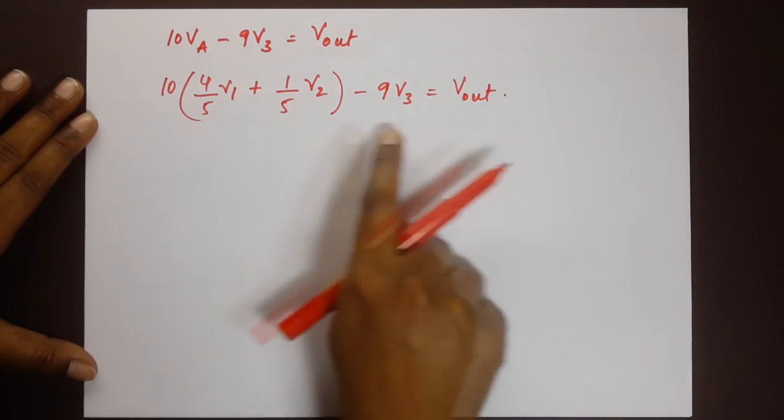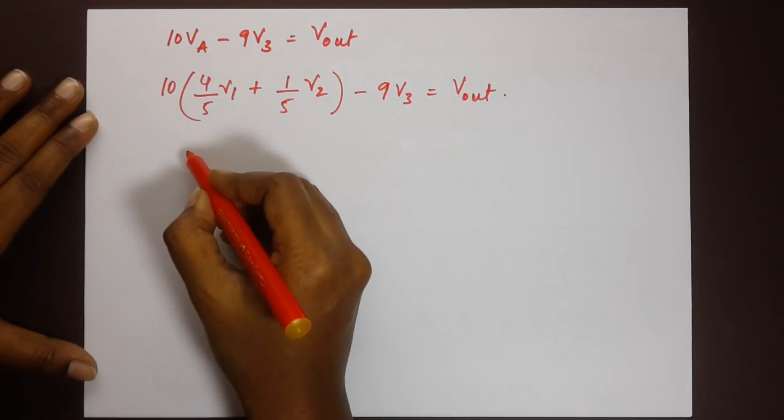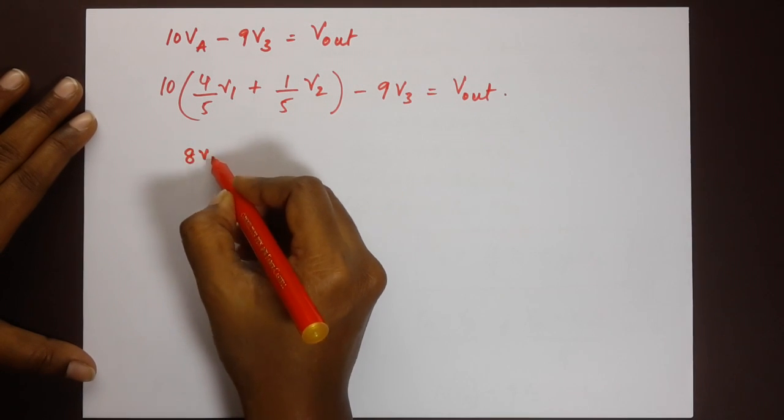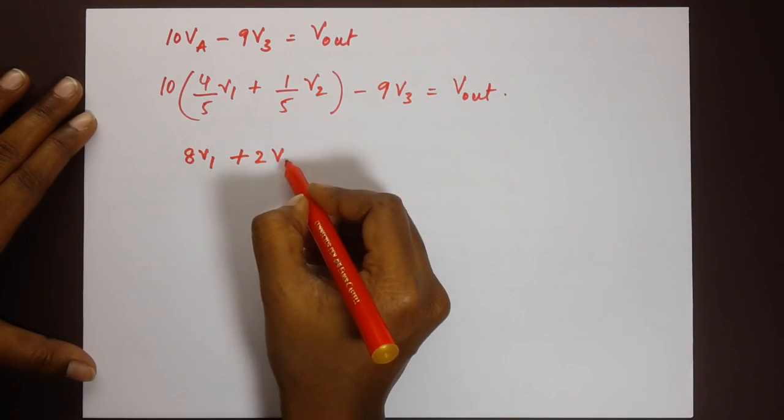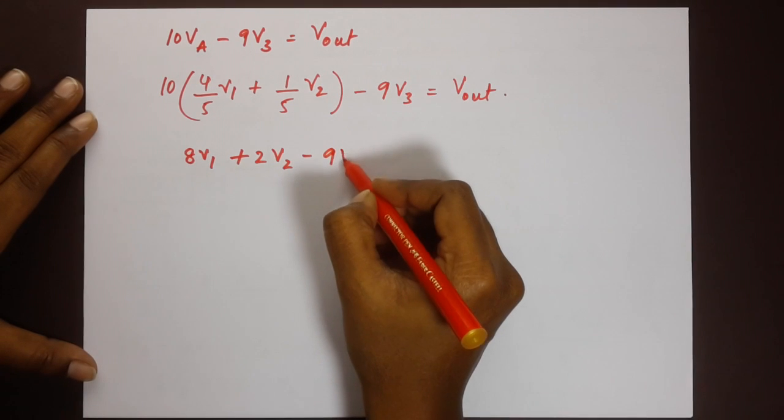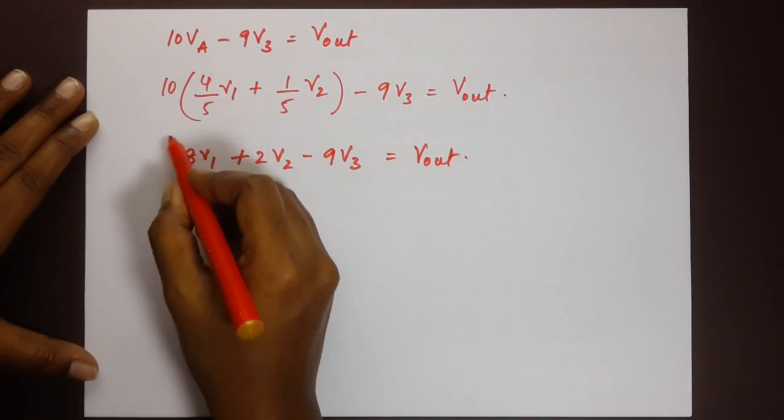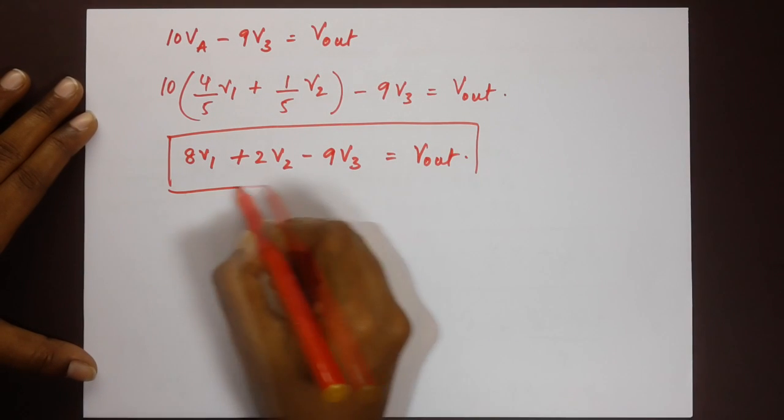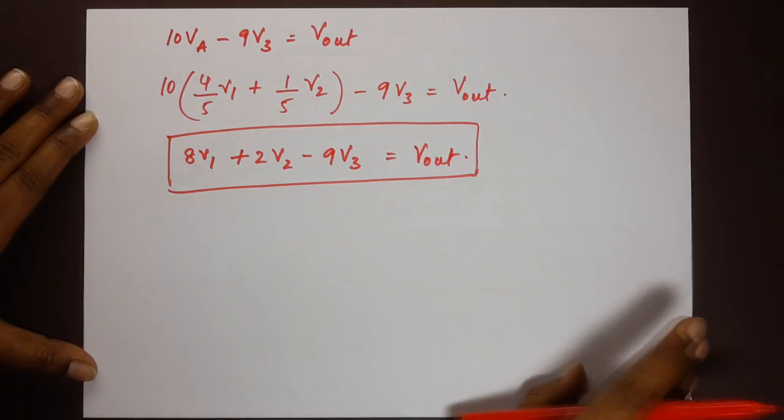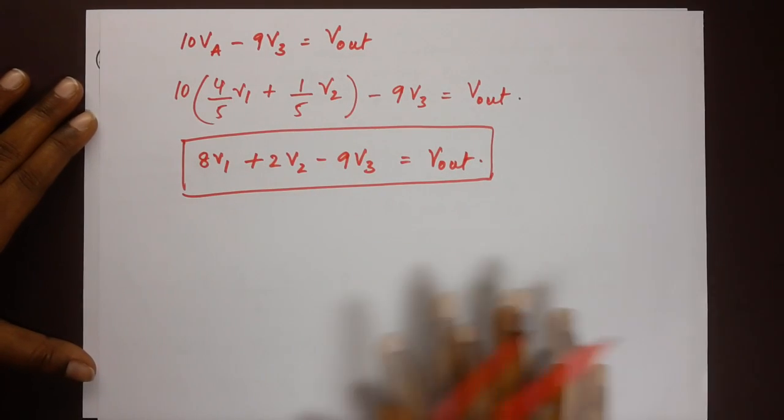Let's open up the brackets and simplify. We will get 8V1 plus 2V2 minus 9V3 is equal to Vout. This is our voltage equation at the output.